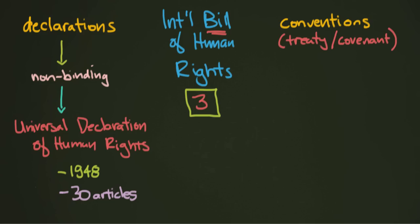The Universal Declaration of Human Rights is a very important document — it will be posted to the course page and is likely required reading. It's a very good read because these are all rights you have, and if they're ever violated, you can point to it and do something about it. On the other side, we have conventions, treaties, and covenants, which are binding. This means you have to follow them — signing a treaty obligates you. It's a very big step to sign a convention.